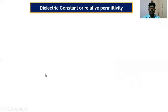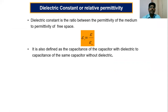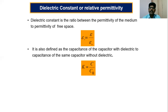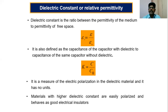Now we can see what is a dielectric constant or relative permittivity. Dielectric constant is the ratio of the permittivity of the medium to the permittivity of free space, given by ε_r = ε / ε₀, where ε is the permittivity of the medium and ε₀ is the permittivity of free space. It is also defined as the capacitance of a capacitor with the dielectric to the same capacitor without dielectric: K = C / C₀. It is a measure of the electric polarization in the dielectric material and has no units. Materials with a higher dielectric constant are easily polarized and behave as good electric insulators.